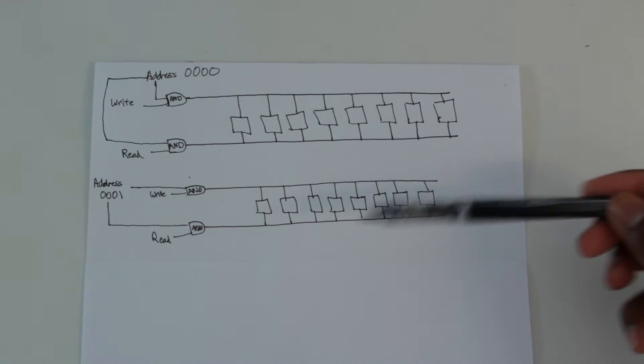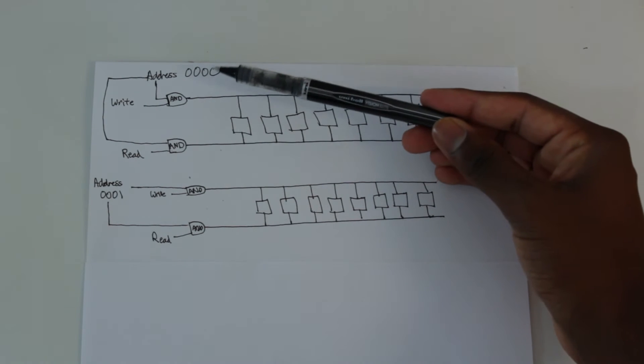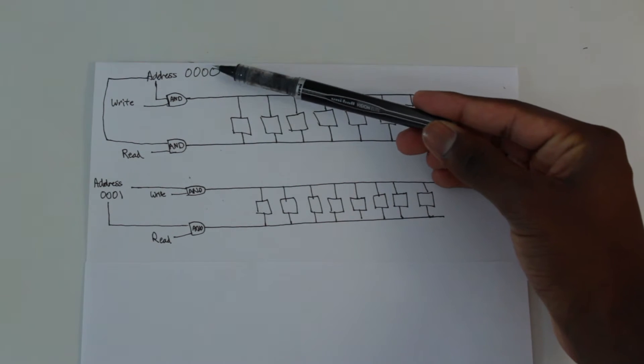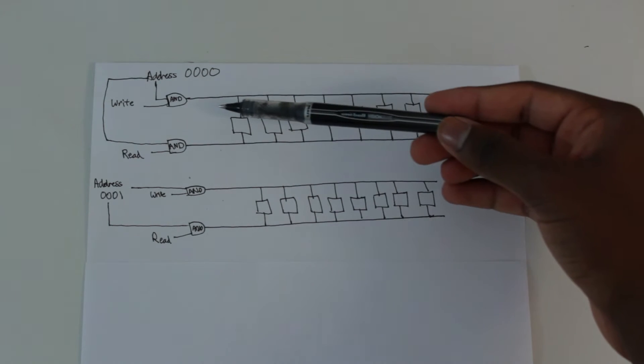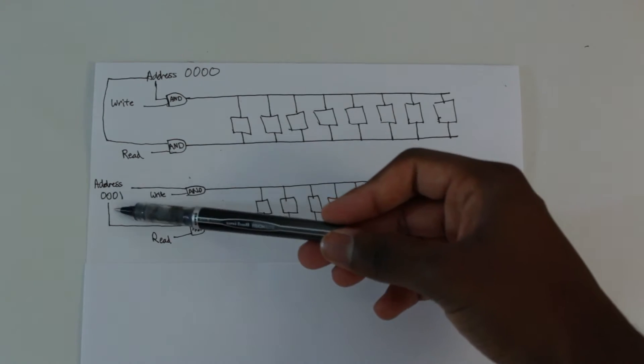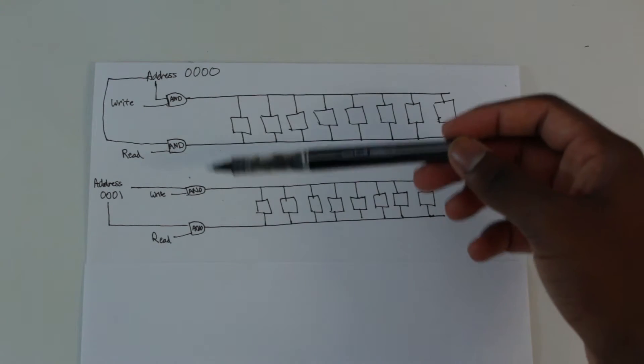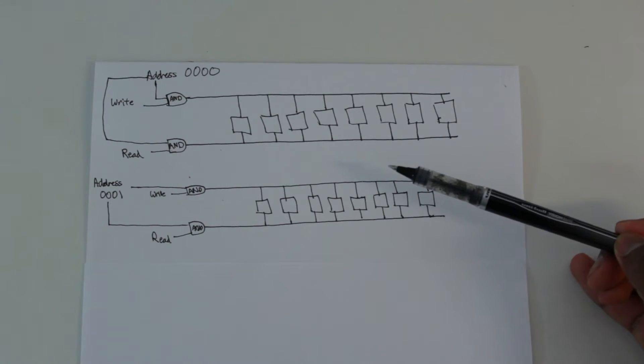This way we can choose which one to interact with on an individual level. And we do this with an address. So when the address is 0000, so four zeros, the first address, then we're interacting with this one. When the address is 0001 or the second address, then we're interacting with this byte.